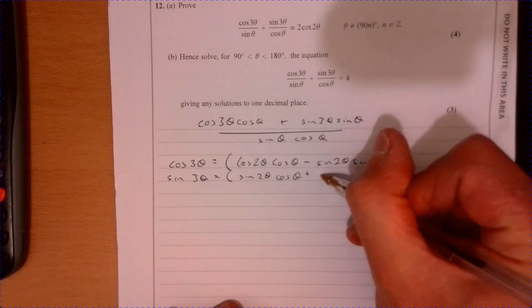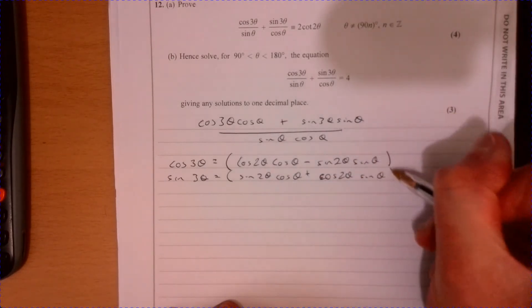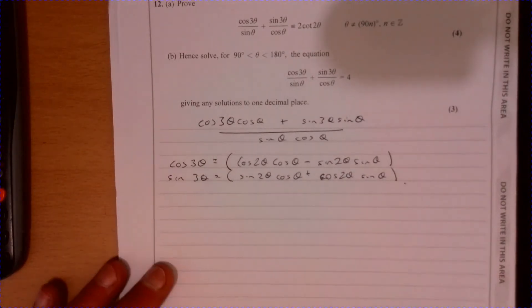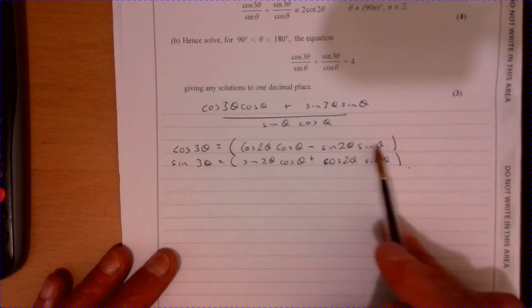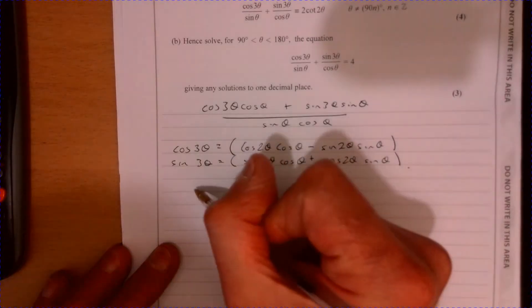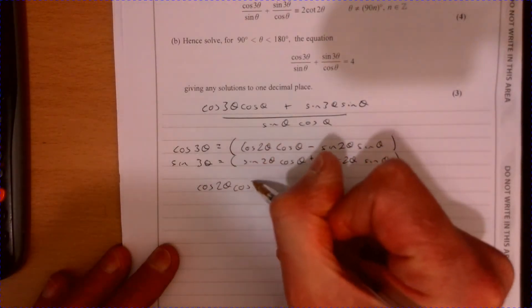It looks a bit messy but let's just put it all back in and let's see where it takes us. We're going to have cos θ multiplied by this, so I'm just going to do that in one move. We've got cos 2θ cos squared θ.